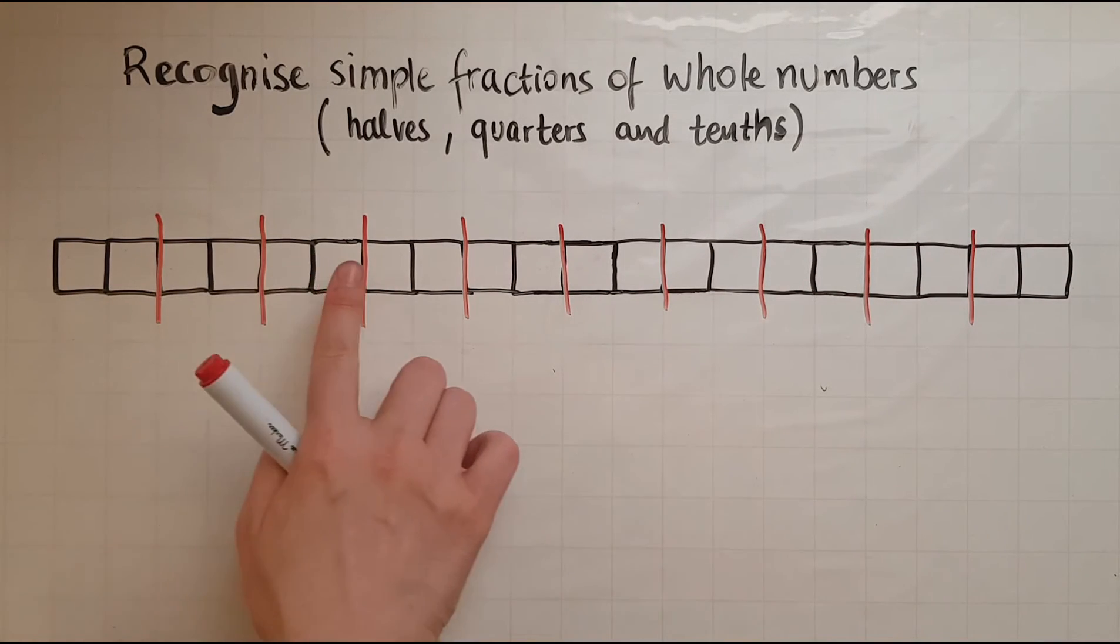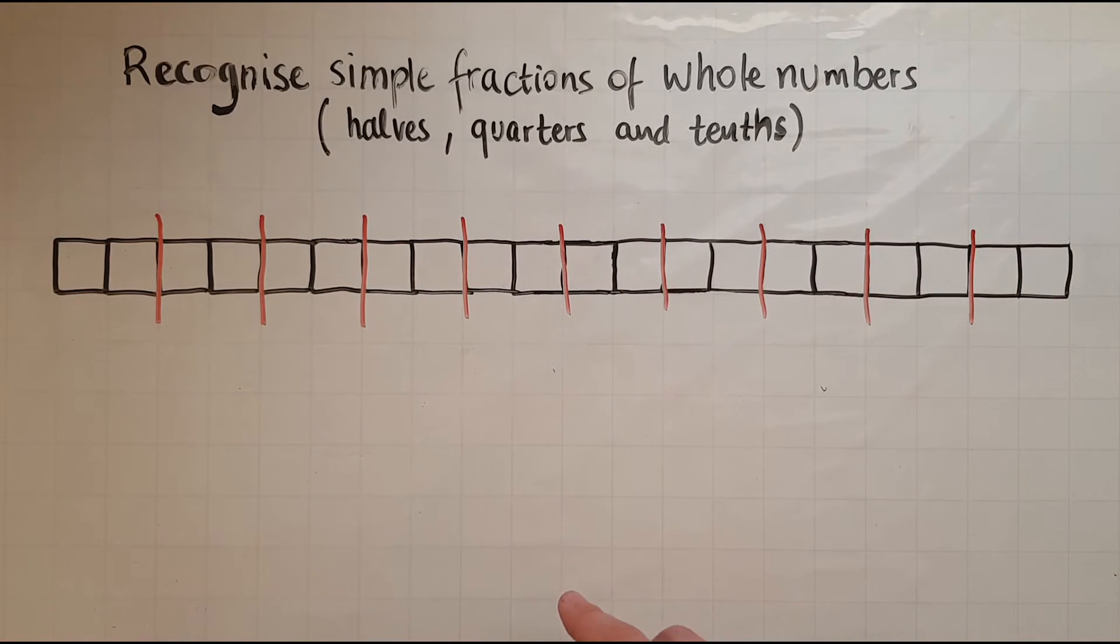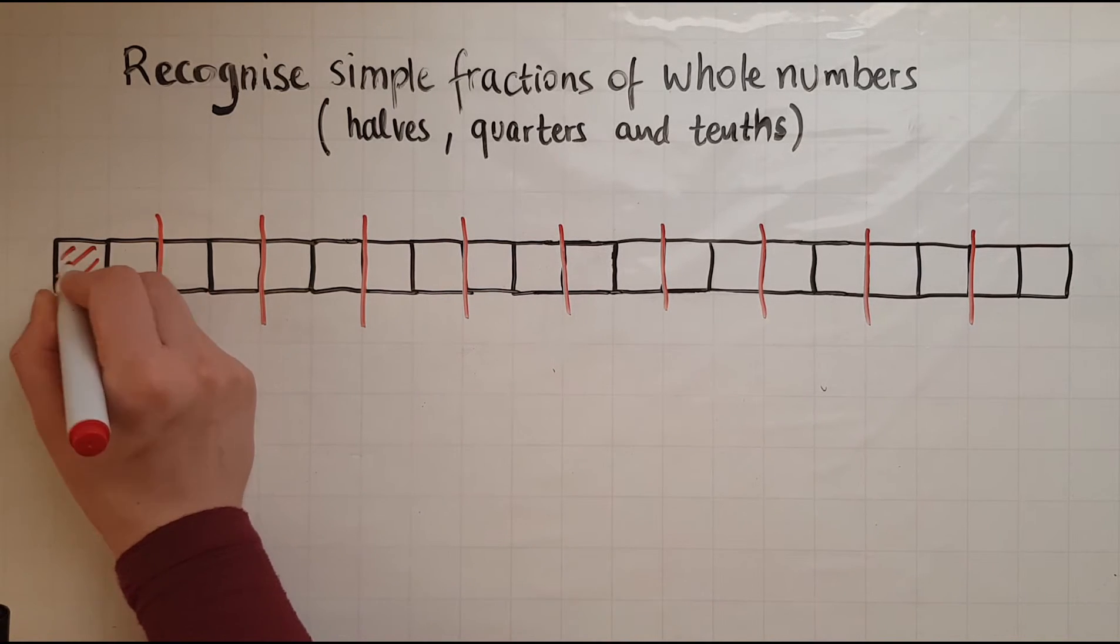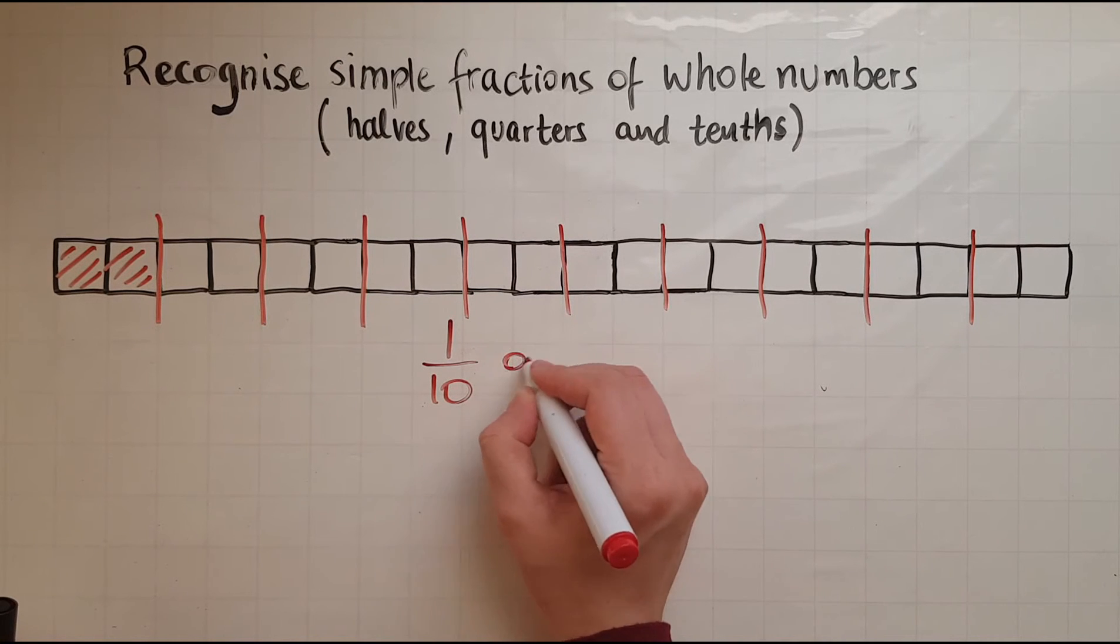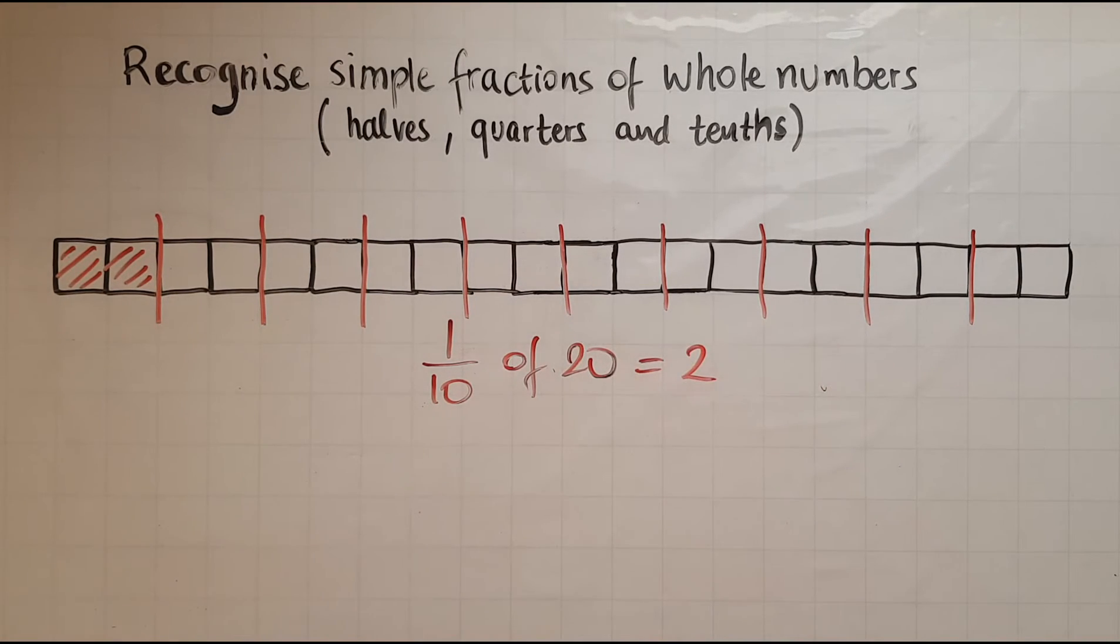So we have 1, 2, 3, 4, 5, 6, 7, 8, 9, 10. So 1 tenth is equal to 1 of these parts. So 1 tenth of 20 is equal to 2. So that is how we find a tenth of something. That is just one way.